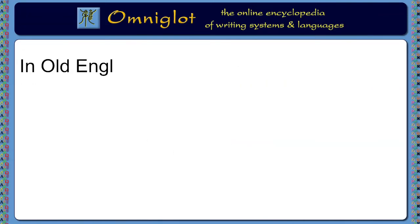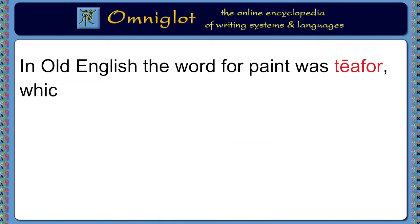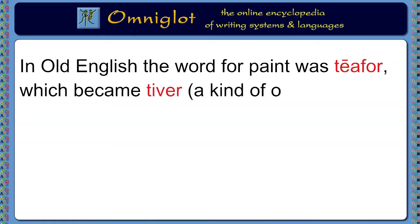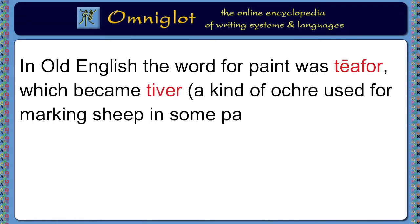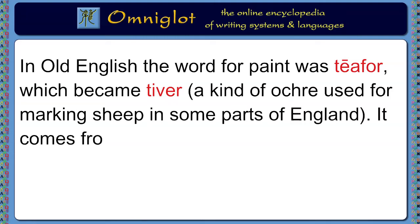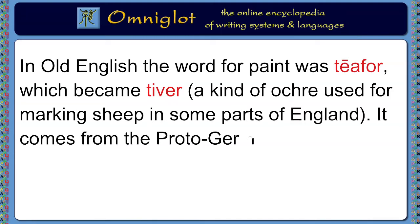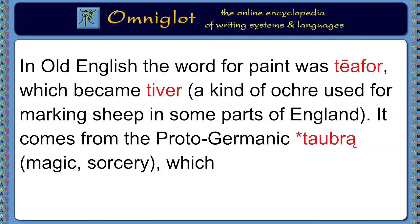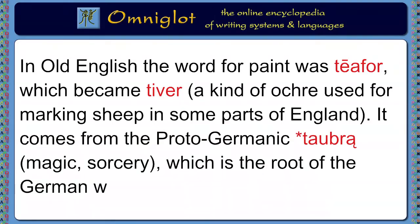In Old English, the word for paint was something like 'tēafor', which became 'tiver', meaning a kind of ochre used for marking sheep in some parts of England. It comes from the Proto-Germanic 'taubrą', meaning magical sorcery, which is the root of the German word 'Zauber', meaning magical spell.